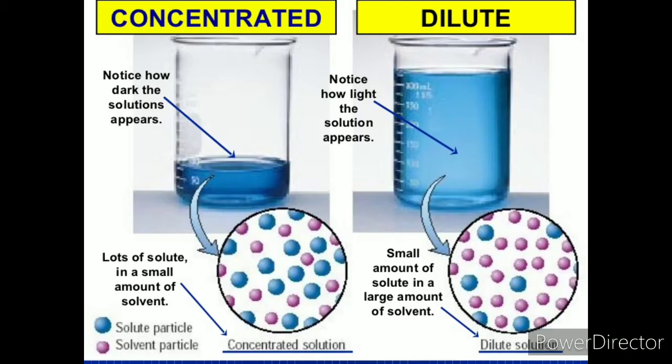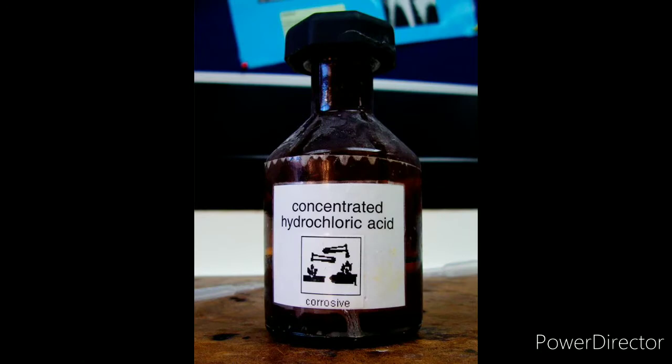Now let us understand concentrated acids and dilute acids. All acids are solutions of acidic gases in water. A solution containing the maximum amount of the acidic gas — that is, where the concentration of the acidic gas is maximum compared to water — is called a concentrated acid.